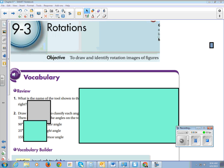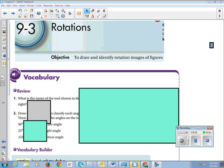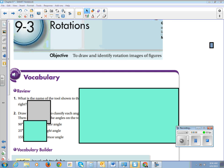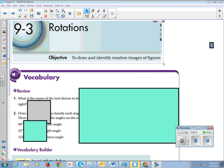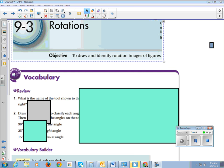Alright, so this is chapter 9, section 3 called Rotations. Our learning objective, which I ask all students to put on their notes to make sure you know what you're supposed to learn. So out of this section, we're supposed to learn how to draw and identify rotation images of figures.